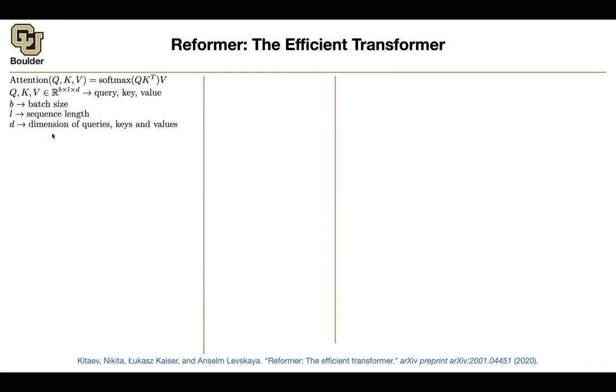all of these matrices. B is the batch size, L is the sequence length, and D is the dimension of your query, key, or your values. Let's take a look at this. Q times K.